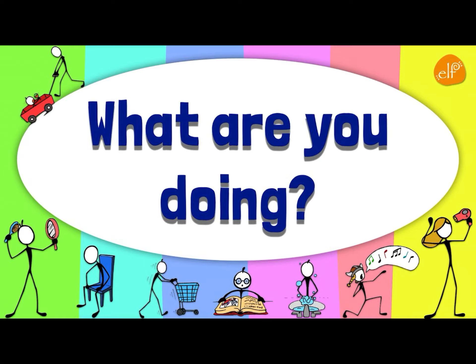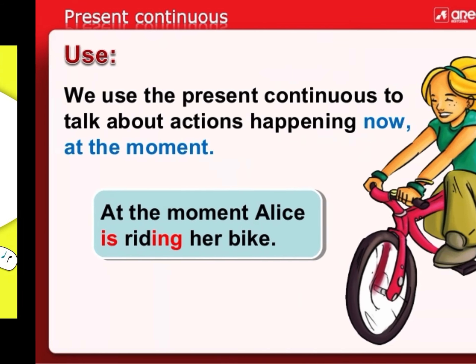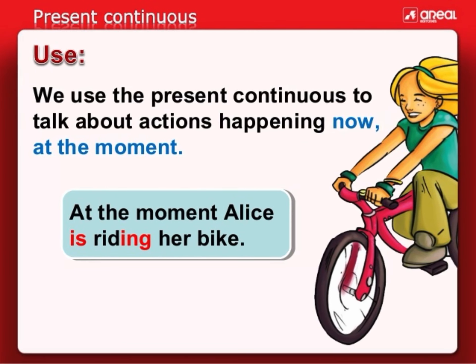What are you doing? Remember that the present continuous has to be used when we talk about actions happening now. We use the present continuous to talk about actions happening now, right now, at the moment. Usamos el presente continuo para decir una acción que está pasando ahora mismo, que está sucediendo ahora mismo.